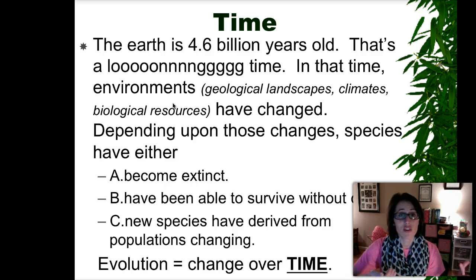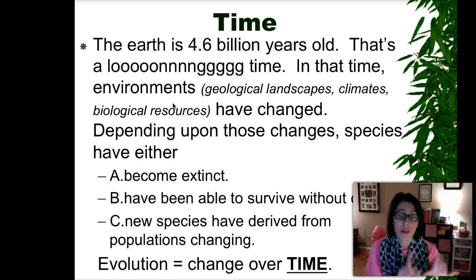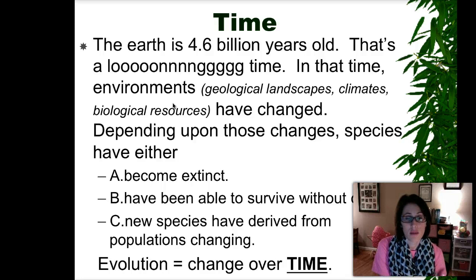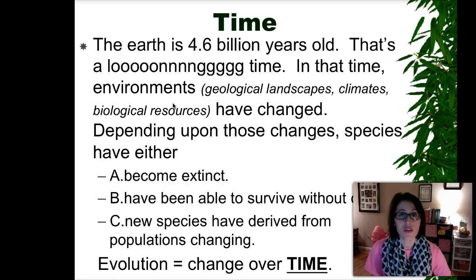Because of those changes, organisms have had to either adapt to their environment or become extinct. Species have either become extinct, or have been able to survive without change, or a new species has derived from the populations that have changed over time. When we talk about evolution, we're talking about changes over time through generations — maybe hundreds or thousands of years.